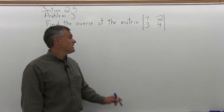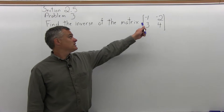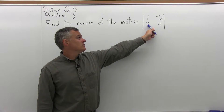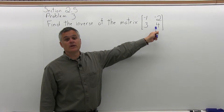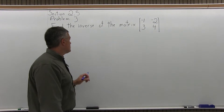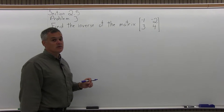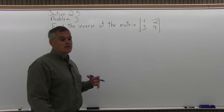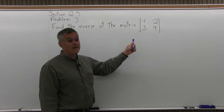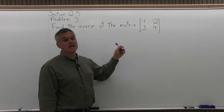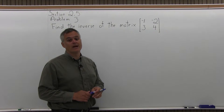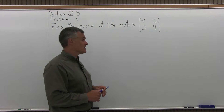It says find the inverse of the matrix, and they give you a fairly small matrix: negative 1, negative 2 in the top row, 3, 4 in the bottom row. To find the inverse of a matrix, what we need to do is make essentially a double matrix with the given matrix on the left half and an identity matrix the same size on the right half.